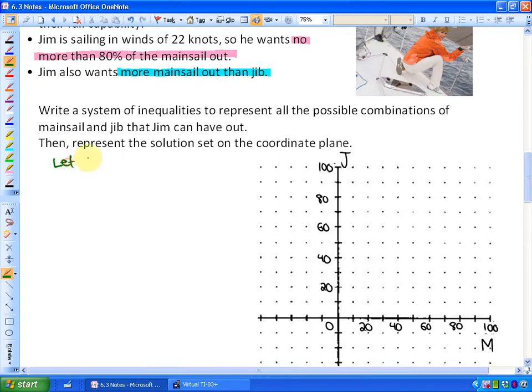We are going to let m equal the percent that the mainsail is out. And j is going to be the percent that the jib can be out, and they can be up to 100% out. What you will see here on the axis, I have already labeled them with m and j. You could label them the inverse way. You could have m on the vertical axis and j on the horizontal. I have just chosen to do it this way, and I have gone up to 100% on each axis.